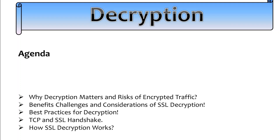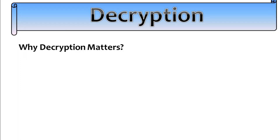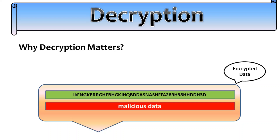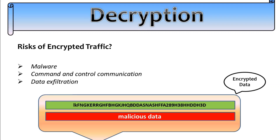Let's start with why decryption matters. As we know, encryption and decryption is a double-edged sword — while it protects data in transit, it can also be a hiding place for malicious activities. That is where devices like firewalls recognize the importance of decrypting traffic to ensure thorough visibility and robust security. Encrypted traffic can be a challenge for traditional security methods.